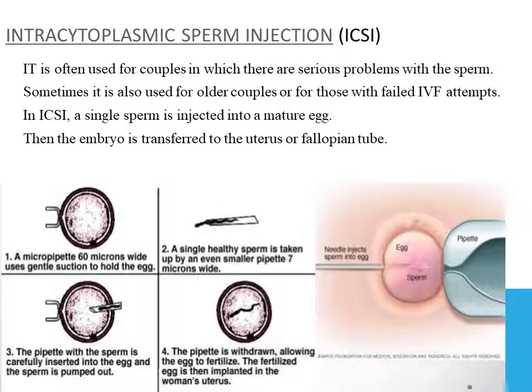Intracytoplasmic sperm injection (ICSI) is a laboratory procedure in which a single sperm from the male partner is injected directly into an egg from the female partner, and then the fertilized egg is implanted into the woman's uterus. This ensures fertilization occurs rather than leaving it to chance. However, the chances of success are about 50-50, as natural mechanisms like implantation may still interfere.